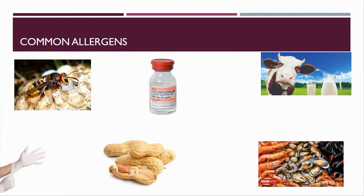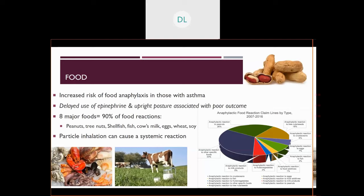Some common allergens would be venom, certain medications — especially muscle relaxers and antibiotics — cow's milk, shellfish, peanuts and tree nuts, and latex. In pediatric patients, food is a common allergen, and you will have increased risk of food anaphylaxis in those patients who already have asthma.